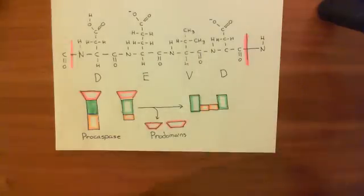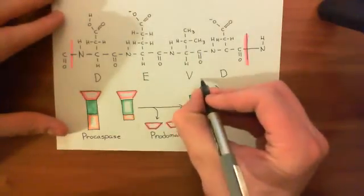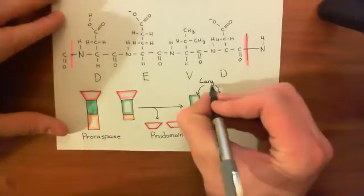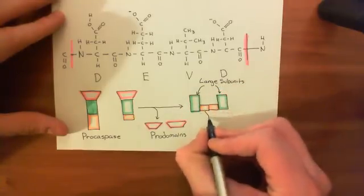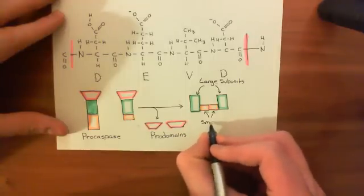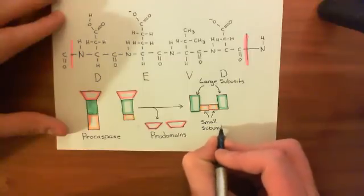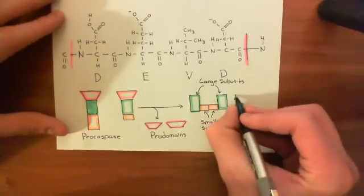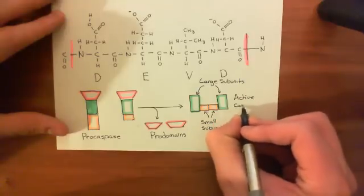So this is our active caspase, and it's made up of these two large subunits from the two pro-caspases. So this is a large subunit, large subunits. And it's made up of these two small subunits which are in orange. These are the small subunits. And this now is the active caspase enzyme.